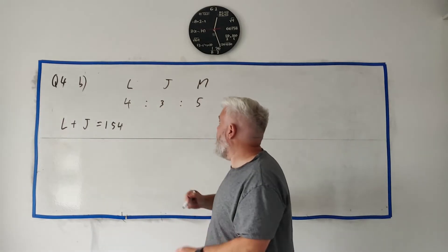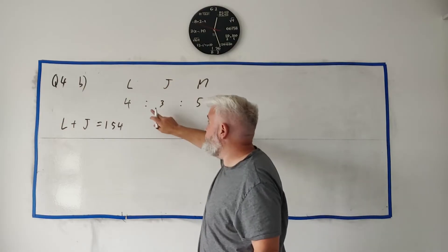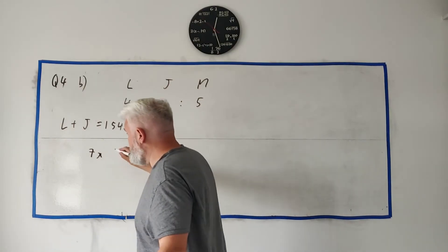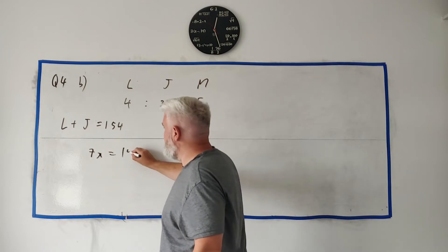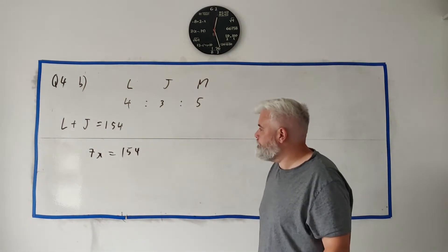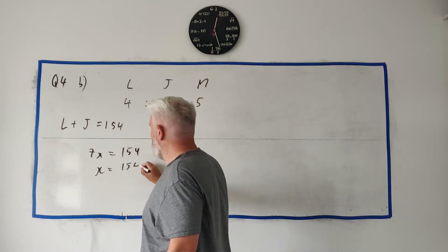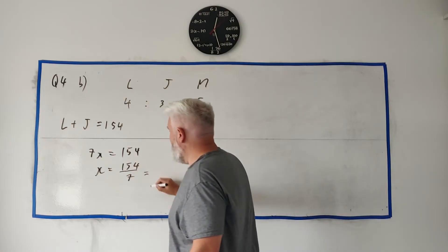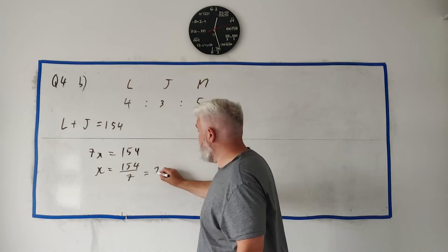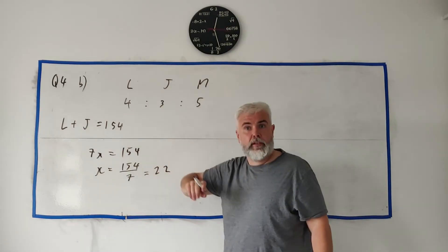We can do that by this bit of information: Liam and John have seven packets between them. So 7x is equal to 154, and so how much is one of these packets worth? This is 154 divided by 7, and that goes in 22. Each packet, each unit, is worth 22 euro.